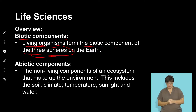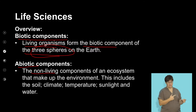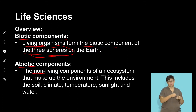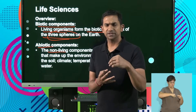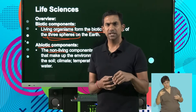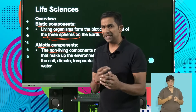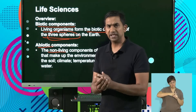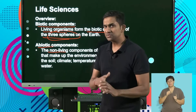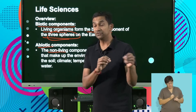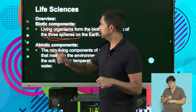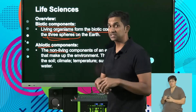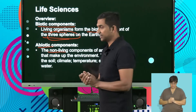The abiotic components are the non-living components, and these would be the constituents of the environment. This would be the soil, the pH of the soil, the types of soil, light, and the temperature of the area. These are the non-living components that influence how these biotic factors or organisms survive.